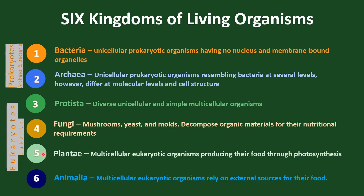Fifth, Plantae: this kingdom comprises multicellular eukaryotic organisms that perform photosynthesis to produce their food. Plants range from tiny mosses to large trees and are essential to Earth's ecosystems. Sixth, Animalia: the kingdom Animalia consists of heterotrophic, multicellular eukaryotic organisms, meaning they rely on external sources for their food. Animals exhibit many complexities, from simple invertebrates to highly complex vertebrates.